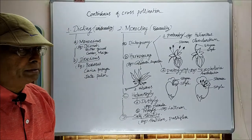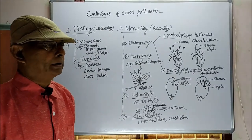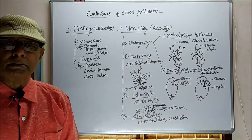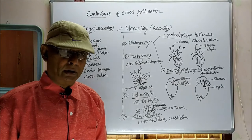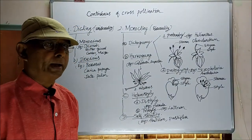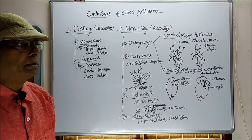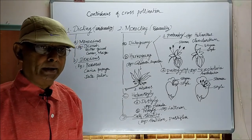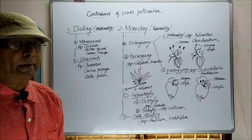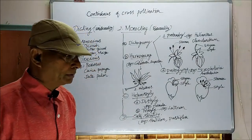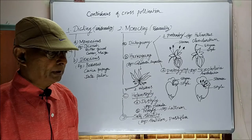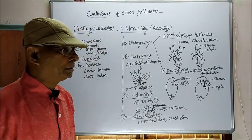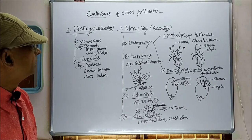Contrivances of cross-pollination means they are collectively some adaptations, contributions, and mechanisms formed naturally in the flowers of the plants in order to avoid self-pollination and in order to promote cross-pollination. Those adaptations and mechanisms naturally found in the plants are called contrivances of cross-pollination.